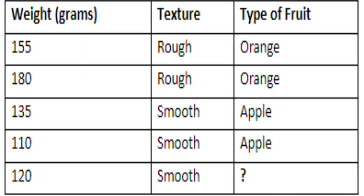For example, here is a table that identifies the type of fruit based on its characteristics. The fruits are differentiated based on their weight and texture. However, the last row gives only the weight and texture without the type of fruit. A machine learning algorithm can be used to identify whether the fruit is an orange or an apple. After the algorithm is fed with training data, it will learn the differing characteristics between an orange and an apple, and can accurately predict the type of fruit.